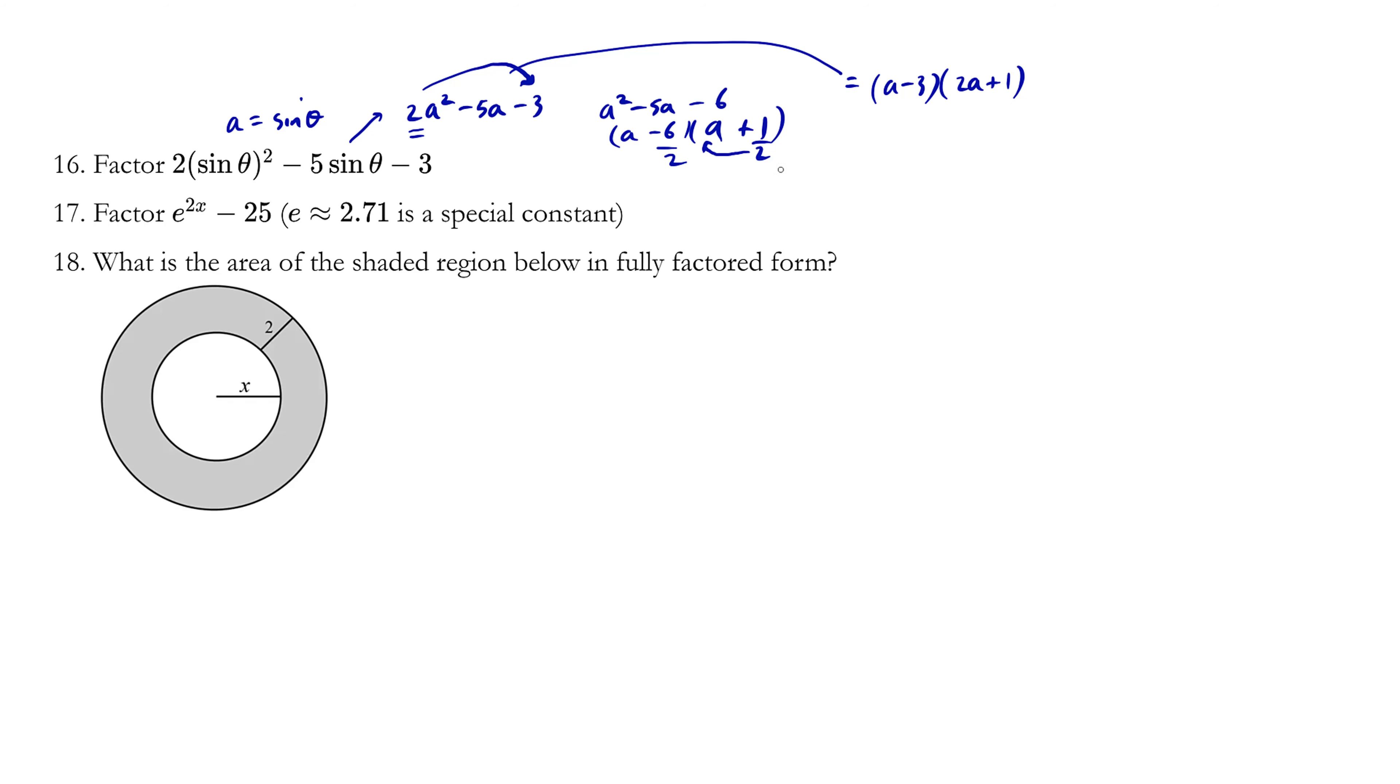And we also remember that a is sin θ, so we're going to write this as - let's use nice big brackets - this is (sin θ - 3) and this is (2 sin θ + 1). So this here is the new expression in factored form.